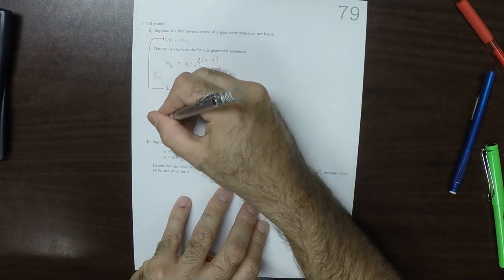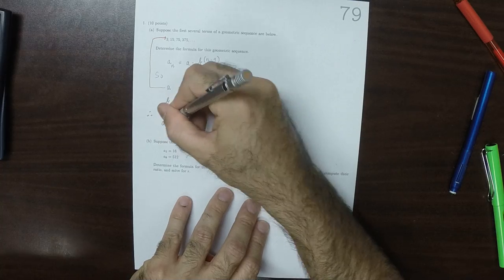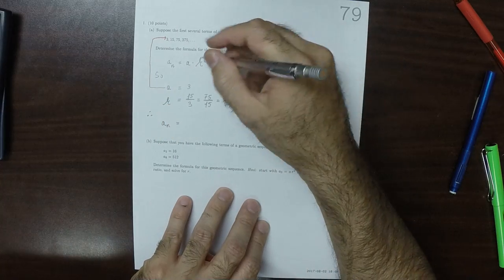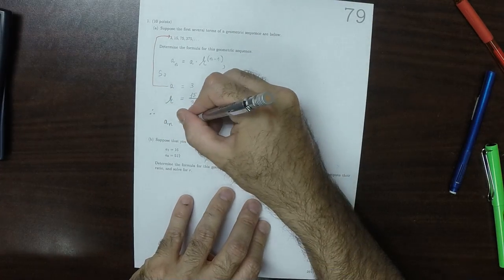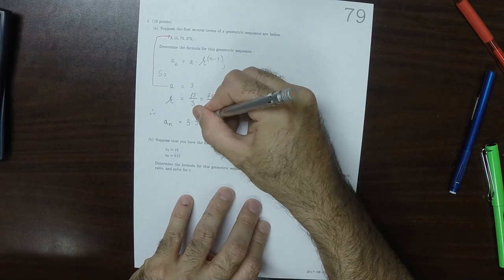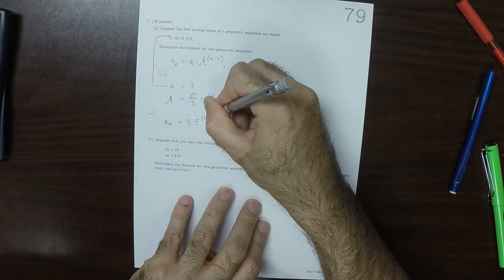So as a result of that, the formula for this geometric sequence is 3 multiplied by 5 to n minus 1.